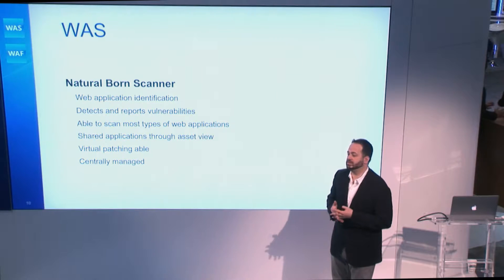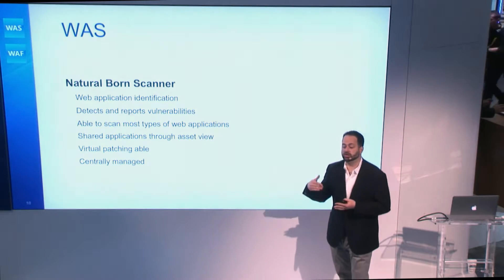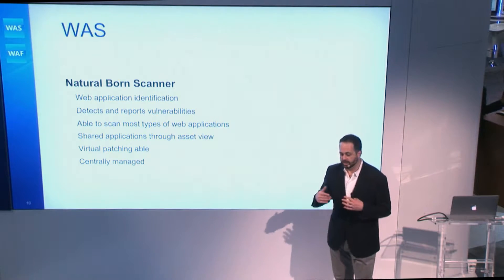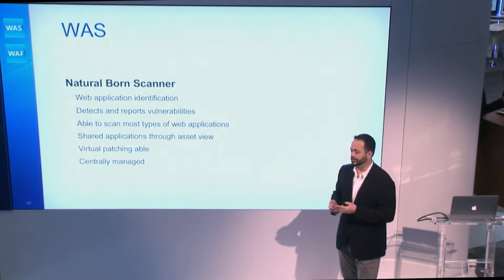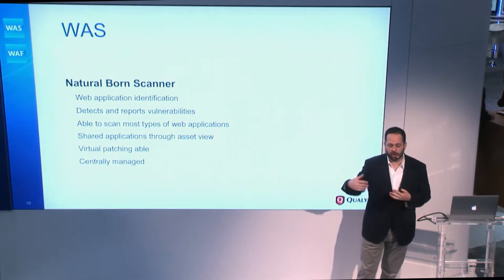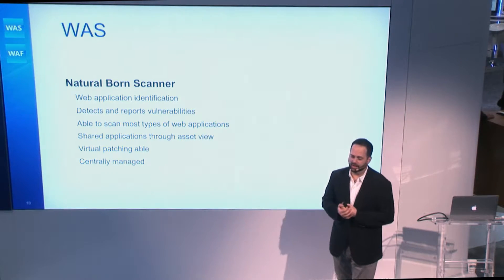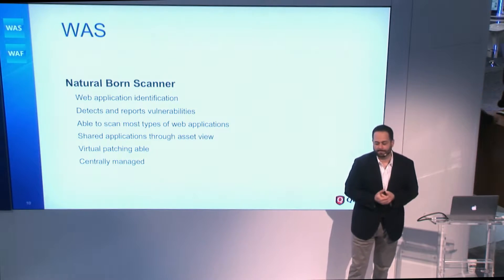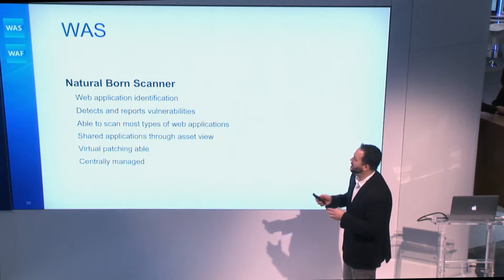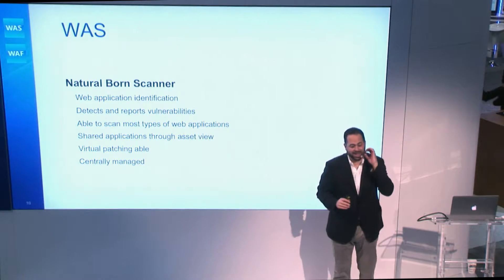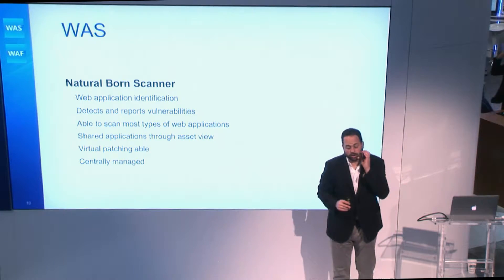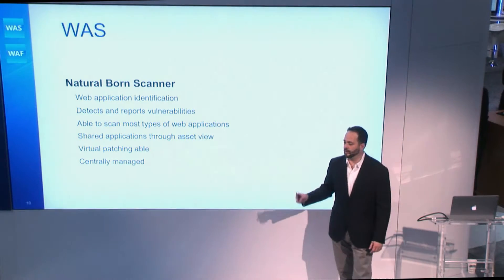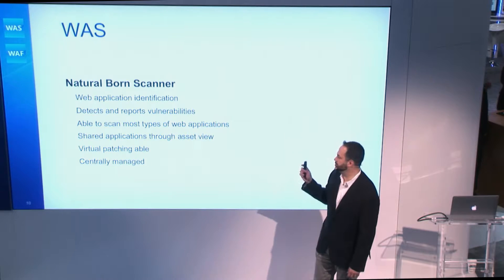This year, we have some amazing new capabilities rolled out as part of WAS 5.0 — being able to scan RESTful services with an automated scanner. Not too many people are doing it; it took us a long time and many development cycles to get it right. And we're also able to patch your backend APIs or REST services that may feed your mobile applications or web services, and virtually patch those as well.